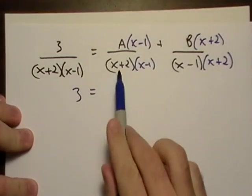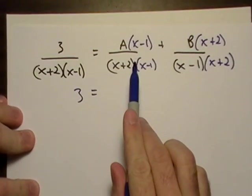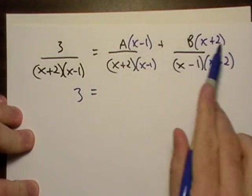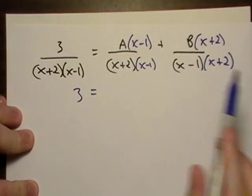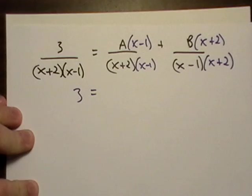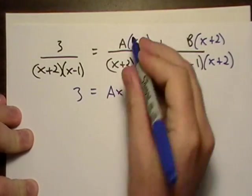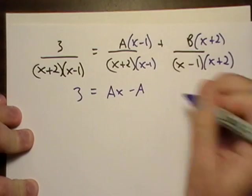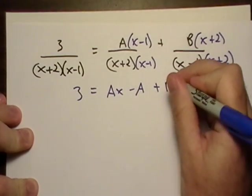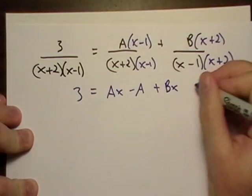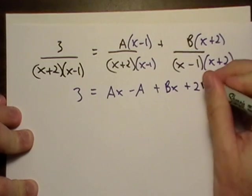And the next thing I need to do is I'm going to multiply all this out. So whatever's in the top, I'm going to go ahead and multiply it all out. So that's going to give me Ax minus A plus Bx plus 2B.